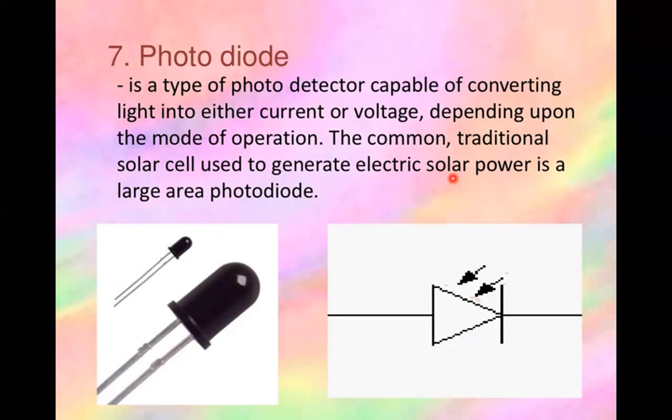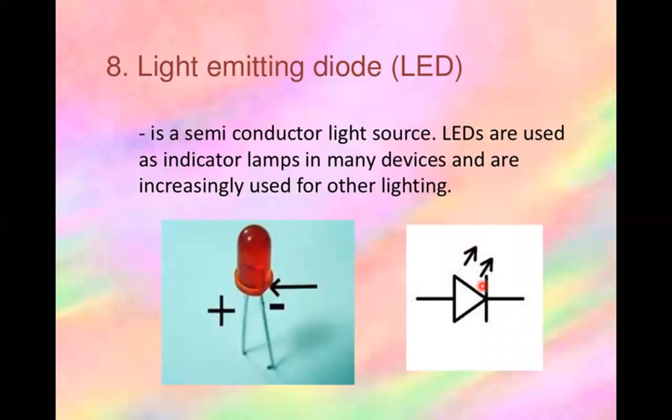A photodiode is a type of photodetector capable of converting light into either current or voltage. The common solar cell used to generate solar power is essentially a large-area photodiode. The intensity or luminosity of the spectral light penetrating the cells is converted into the form of current or voltage.